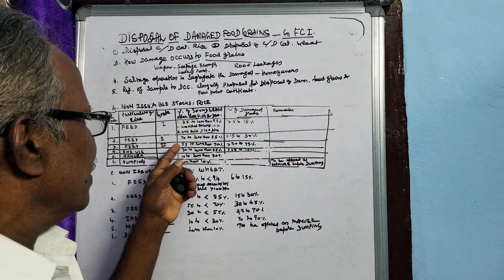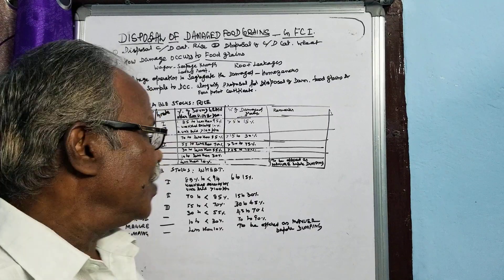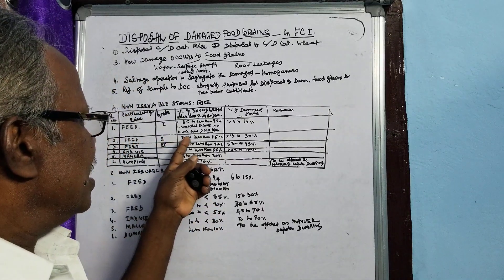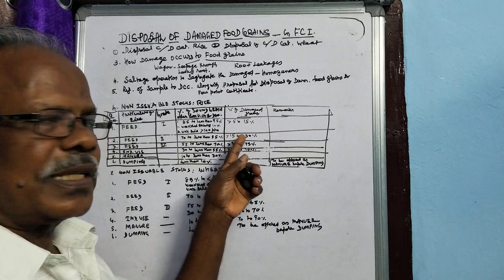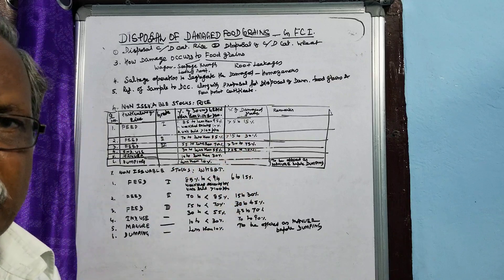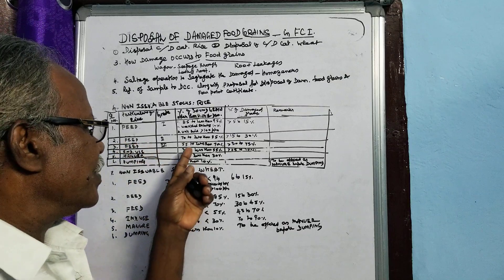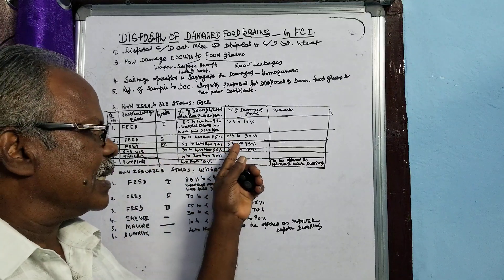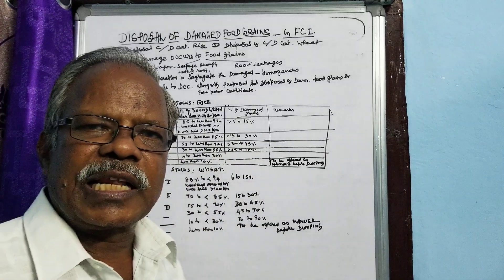Feed means it may go for cattle feed or poultry feed. Feed 2 is 70% sound grain to less than 85% — so the damage grains will be 15% to 30%, and that is categorized as Feed 2. In case of Feed 3, sound grain is 55% to 70% — damage is more than 30% to 45%. This will go for cattle food and poultry feed.